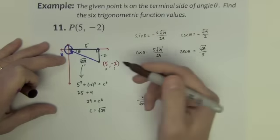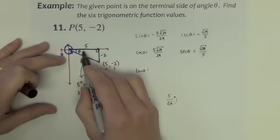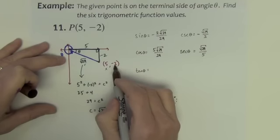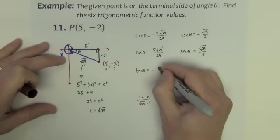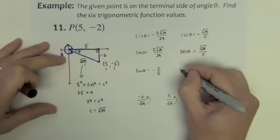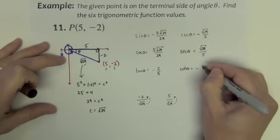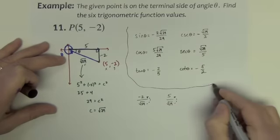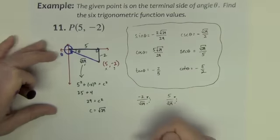Tangent is typically the easy one in these types of problems. It avoids the square root anyway. It's the opposite over the adjacent or the y over the x. Negative 2 fifths. Cotangent is its reciprocal, negative 5 halves. There's our answer.